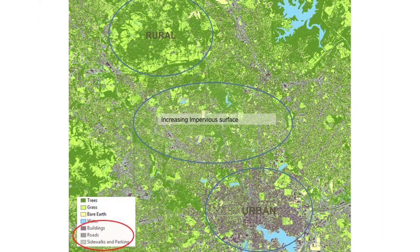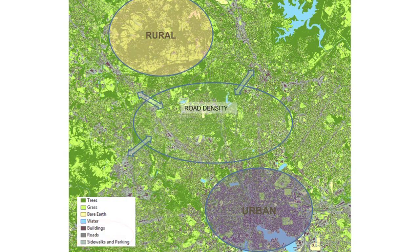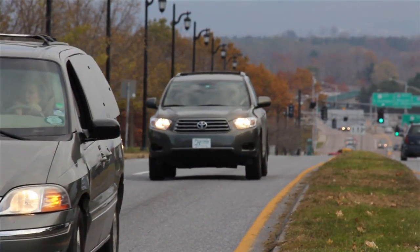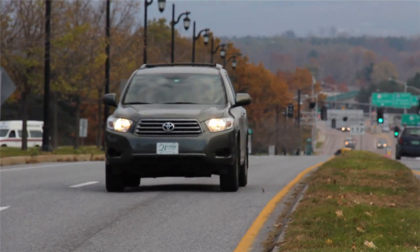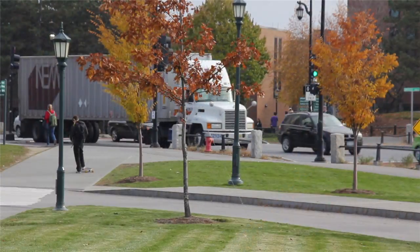What I'm working on is how we can define these areas. We can define them by using different variables: impervious surface, forest fragmentation, road density — all of these variables go into deciding what these zones might be, and that would help us indicate where to focus our resources.